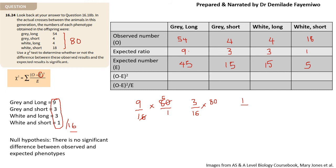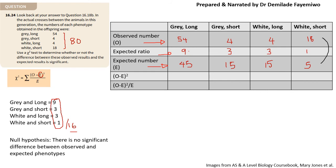What this tells us is that when the actual cross was done, those were the observed numbers they got. But when we predicted, we said from 80 offspring these would be the ratios for each phenotype — and based on those ratios, these should be the numbers they're getting. The chi-squared test is asking: is there a difference between these two sets of data?